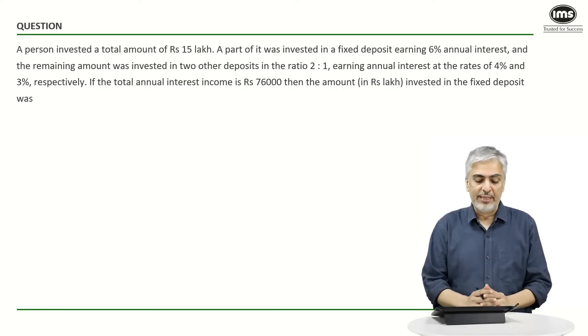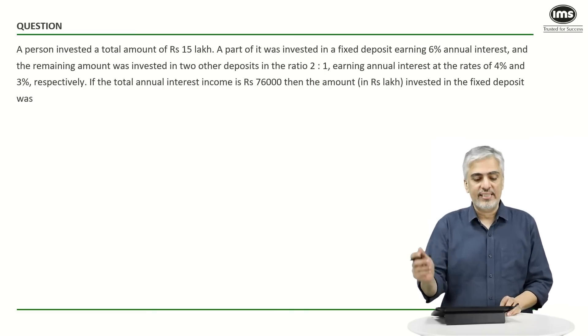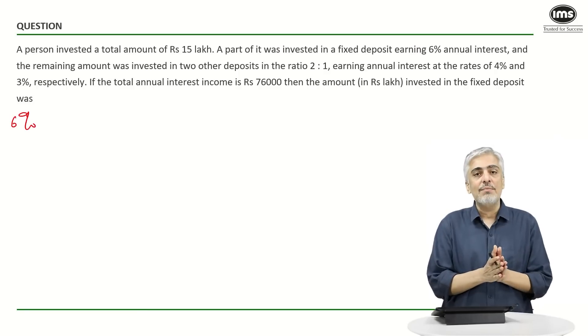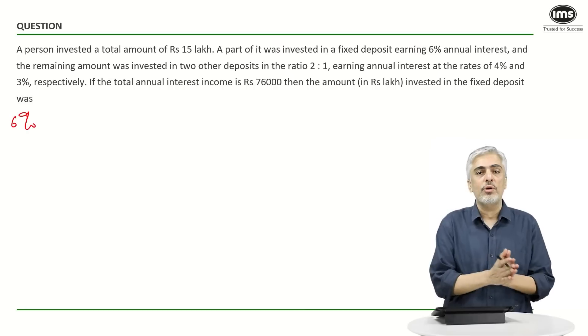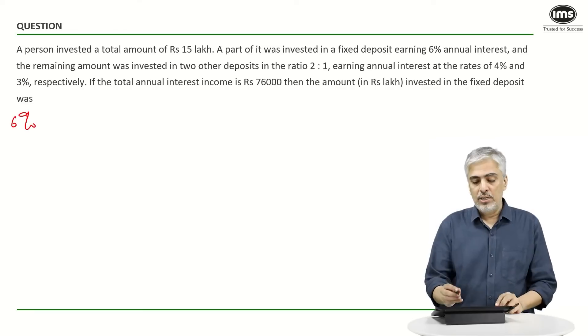For the same question, now I'm going to try and use a different approach. Pay attention carefully. A person has invested a total amount of 15 lakhs. We know that he has invested some amount at 6% and the remaining amount he has broken up into the ratio 2:1, which he has invested at 4% and 3%.